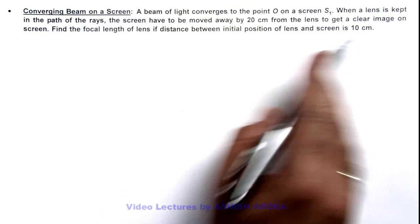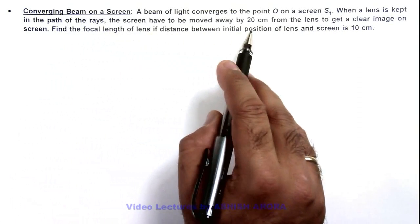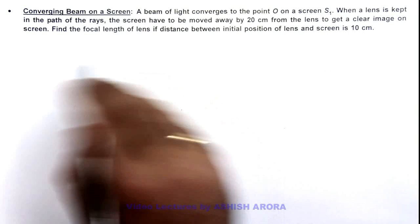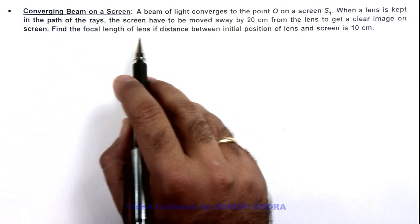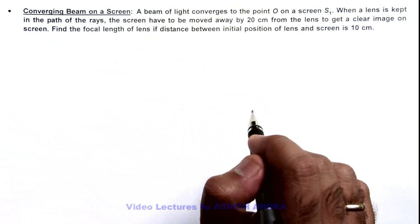When a lens is kept in the path of the rays, the screen has to be moved away by 20 centimeters from the lens to get a clear image. We are required to find the focal length of the lens if the distance between the initial position of the lens and screen is 10 centimeters.